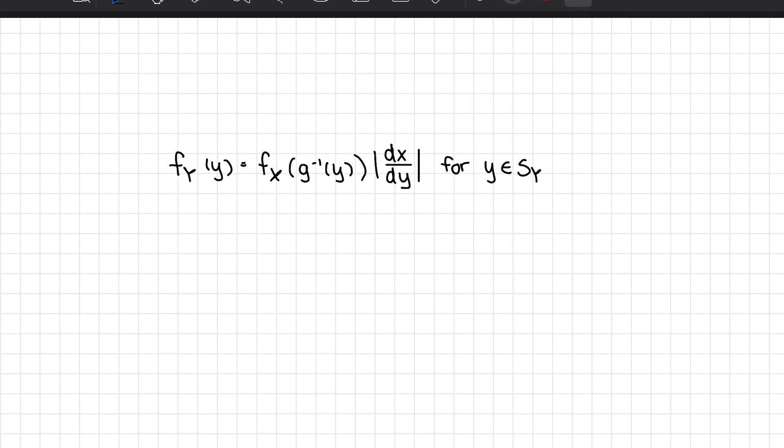The whole point of doing continuous random variable transformations is because when we're given a random variable X, and we're also given a function where Y is a function of X, we want to find the pdf of Y using our given pdf of X.